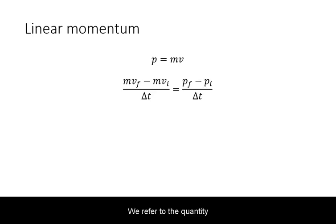This can be rewritten as the change in the quantity mv over the change in time. We referred to the quantity mv as momentum and gave it the symbol lowercase p. Hence, Newton's second law was rewritten as F net equals delta p over delta t.